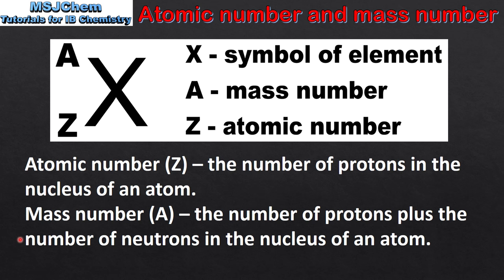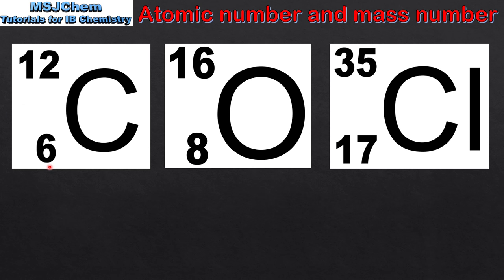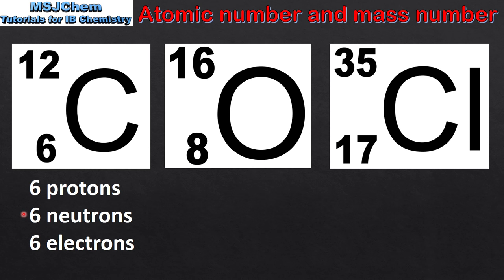Next, we look at some examples starting with carbon-12. The atomic number of carbon is 6, which means it has 6 protons in its nucleus. The mass number is 12, which is the number of protons plus the number of neutrons in the nucleus. If we subtract the atomic number from the mass number we get the number of neutrons, so carbon-12 has 6 protons and 6 neutrons. In a neutral atom the number of protons is equal to the number of electrons, therefore there are 6 electrons in an atom of carbon-12.